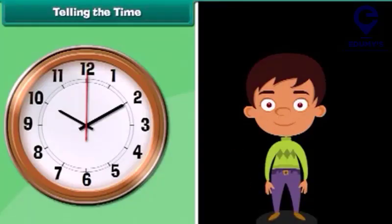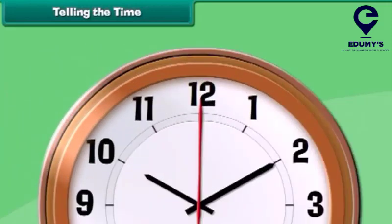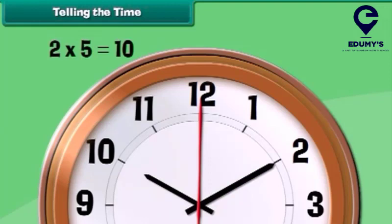Let us now learn to read time. Do you all know the table of 5? Let's revise it. You can read the time easily if you know the table of number 5. The minute and hour hands are read differently. To know the position of the hour hand, we read the numbers written on the clock face. To know the position of the minute hand, we multiply the number by 5. For example, when the minute hand is at 2, the clock is showing 2 multiplied by 5, that is 10 minutes. This clock is showing the time 10 past 10.